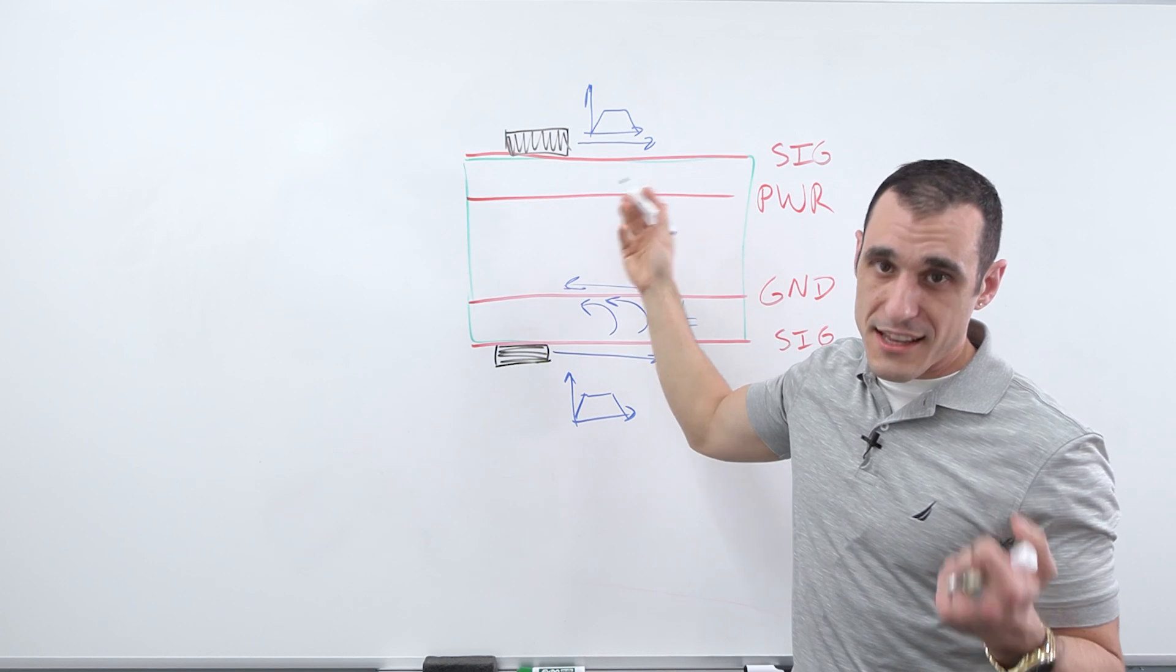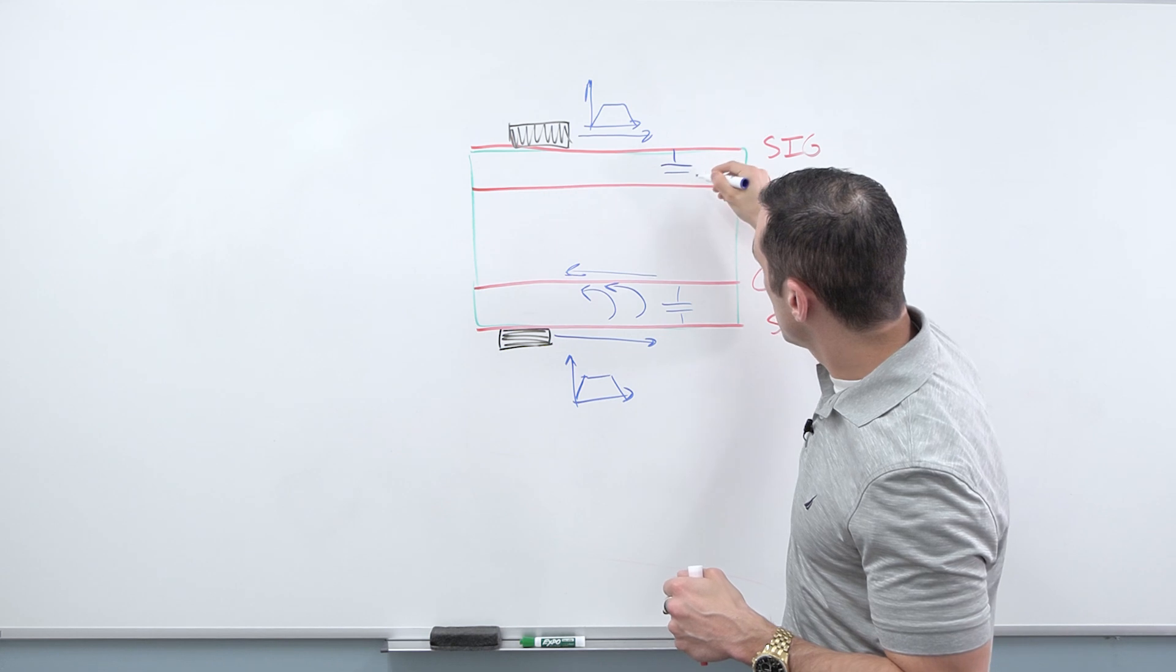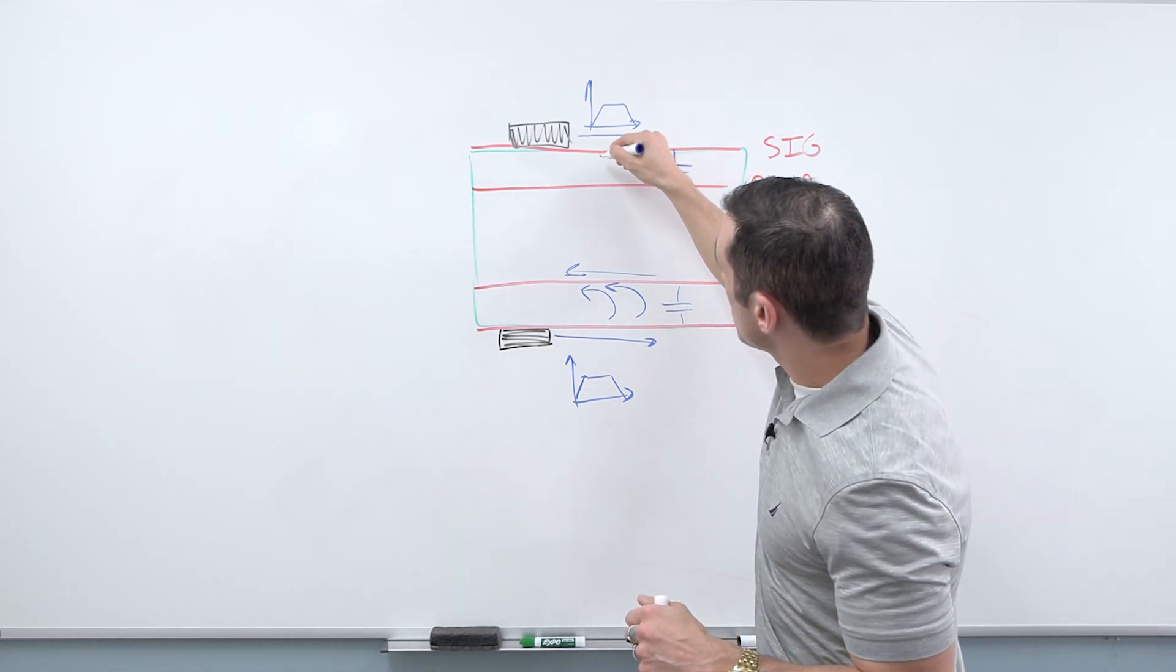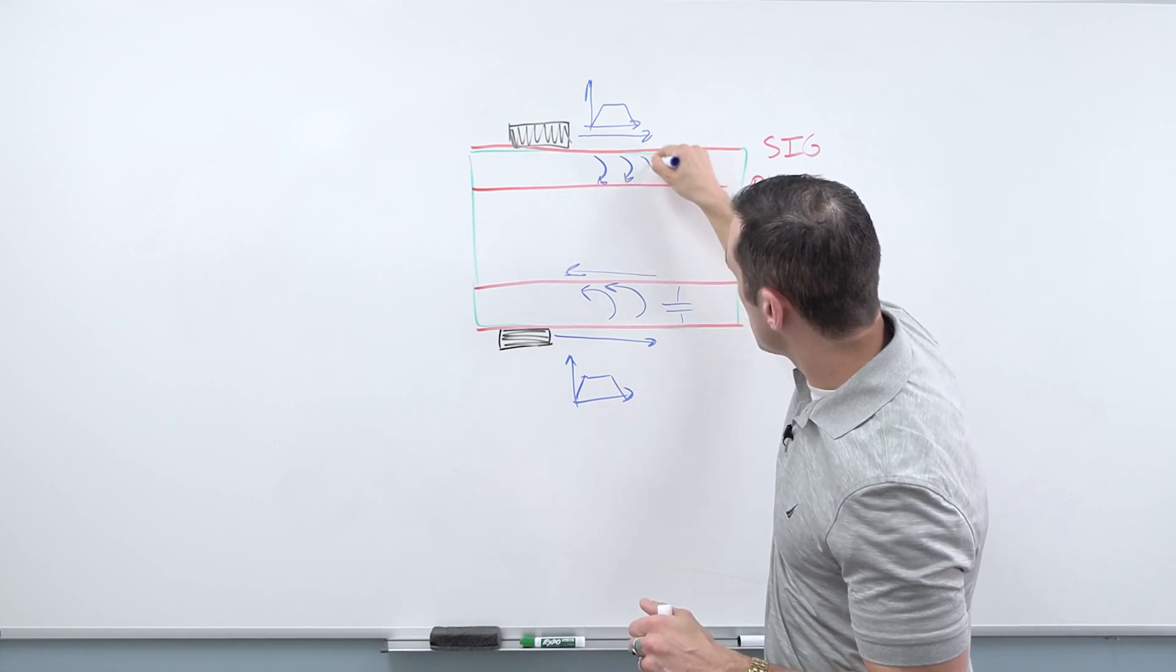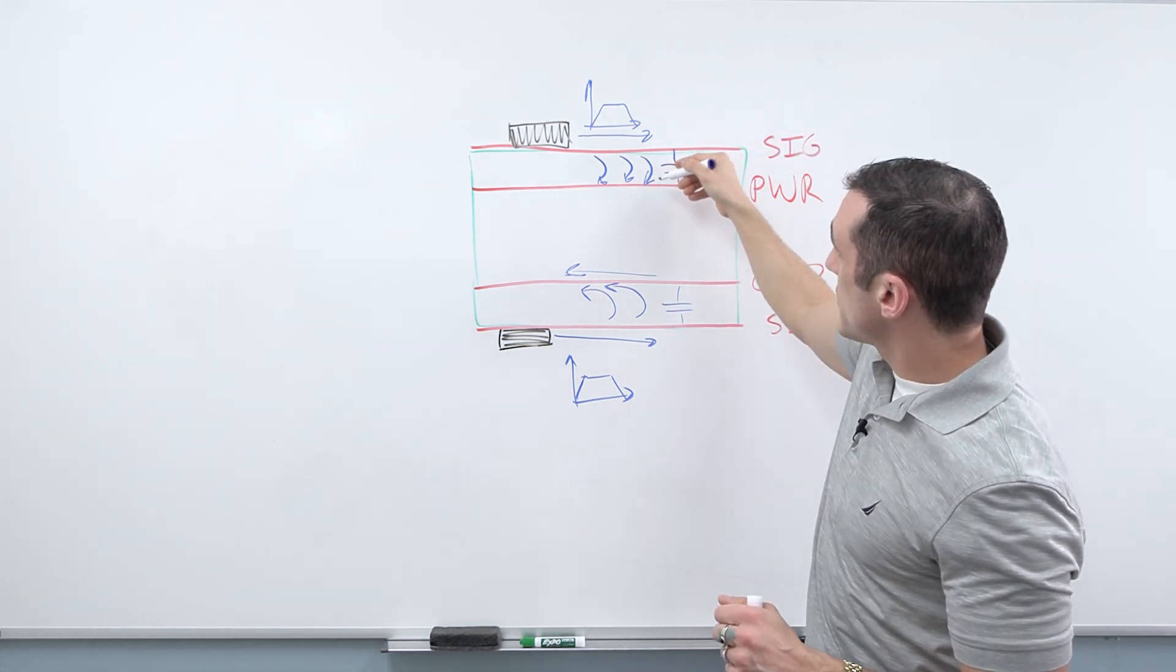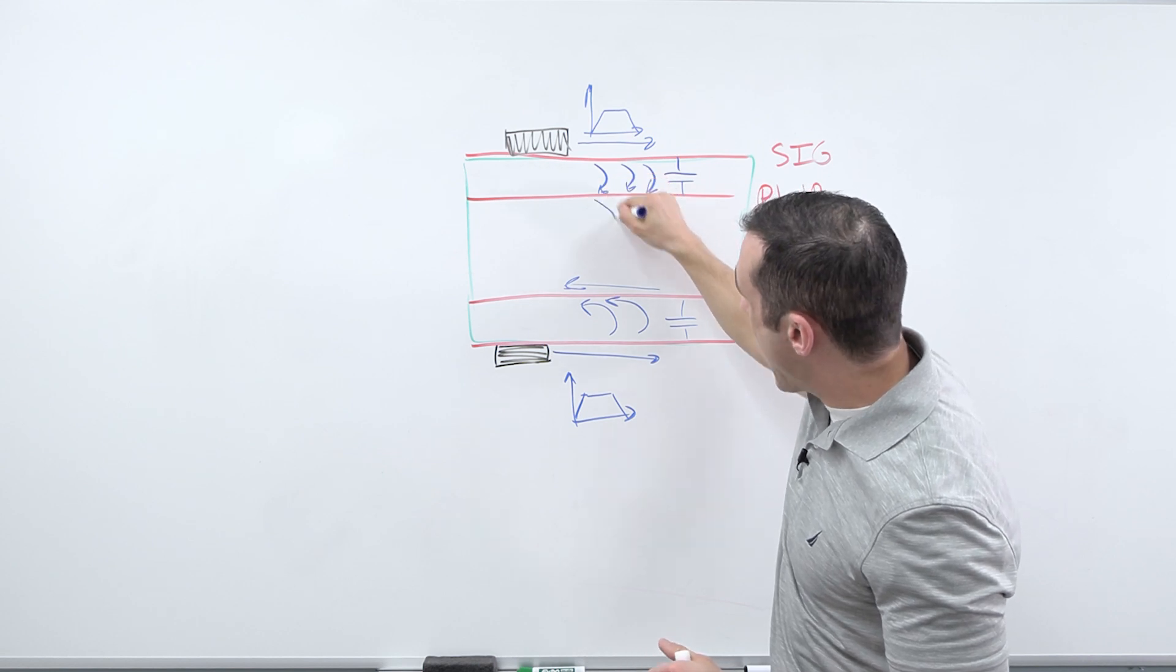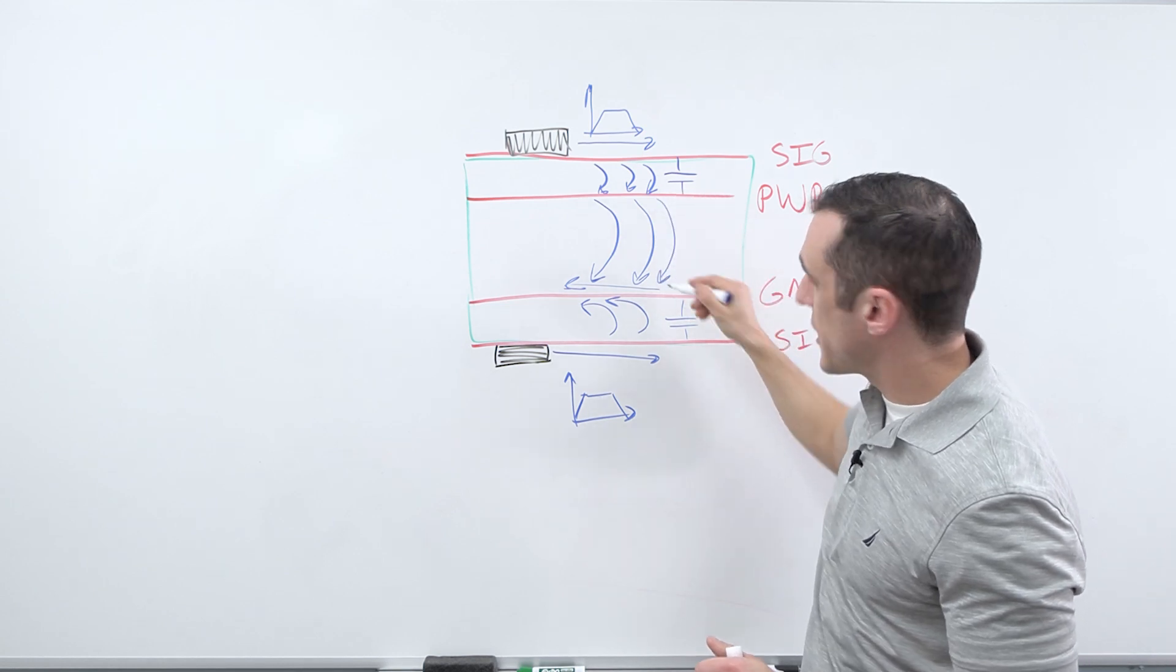However, there's a big asterisk next to that. It is true that there is some capacitance here between your conductors in the signal layer and your conductors in the power plane. So what happens is there is some displacement current that gets induced here in the power layer.